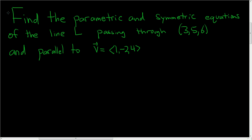Find the parametric and symmetric equations of the line L passing through the point (3,5,6) and parallel to this vector here. All we have to do is use the formula for parametric equations.